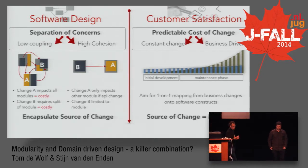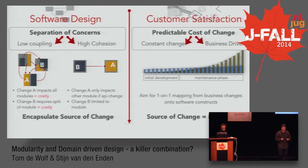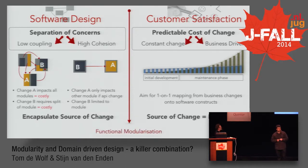Our primary source of change will be a business change. Software design says you have to encapsulate that source of change. Taking these two viewpoints together, it clearly leads us to the need for a functional modularization of our system. The question then becomes: how can we do that in the right way?